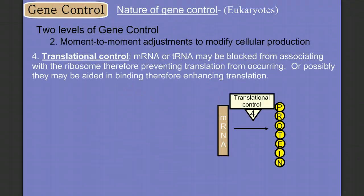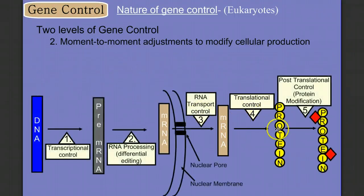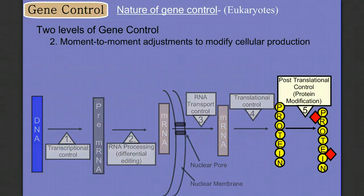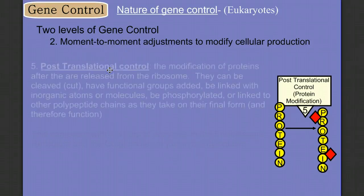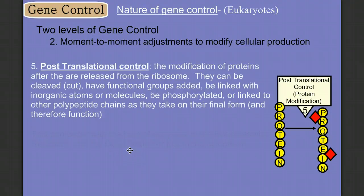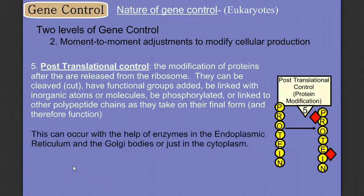If we do get past that and translate our messenger RNA into a protein, there's one last place to exert gene control: post-translational control. After we make our protein, we can modify it — we can cut it, add functional groups, link organic molecules or atoms to it, phosphorylate it, or link it to other polypeptide chains as they take on their final form and function. This can occur with help from ribosomes in the ER, in the Golgi bodies, or out in the cytoplasm.